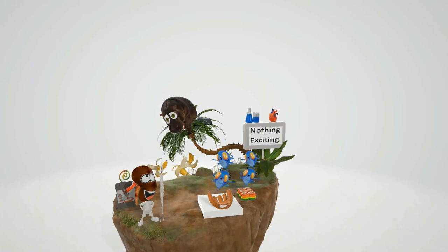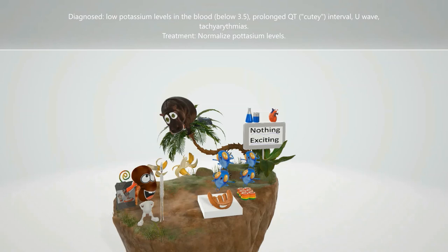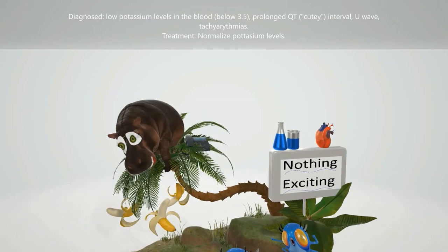We're going to end off this scene just by making mention of a few more high-yield points. That's that hypokalemia is diagnosed based on the presence of low levels of potassium in the blood, generally below 3.5 milliequivalents per liter. It's also important to get an electrocardiogram, which typically shows a prolonged QT interval. I like to think that this hippo is a big cutie over here. He's a big cutie to remind us of the prolonged QT interval, as well as the appearance of a U-wave and atrial or ventricular tachyarrhythmias.